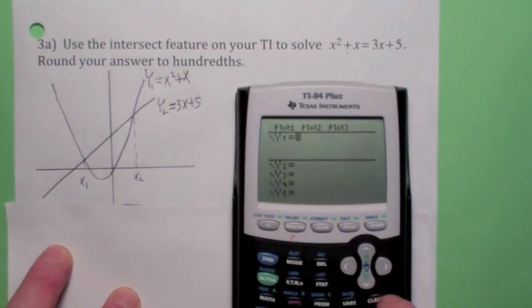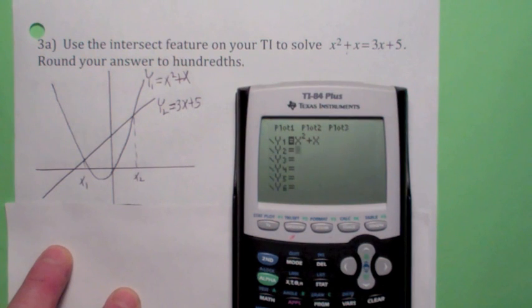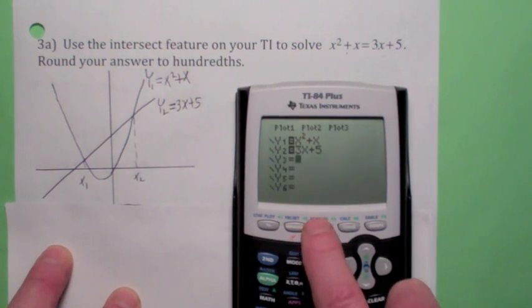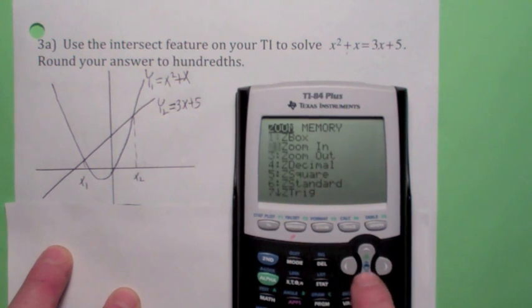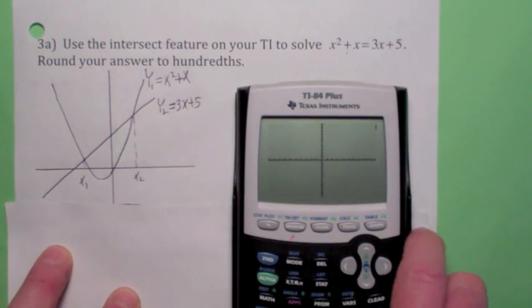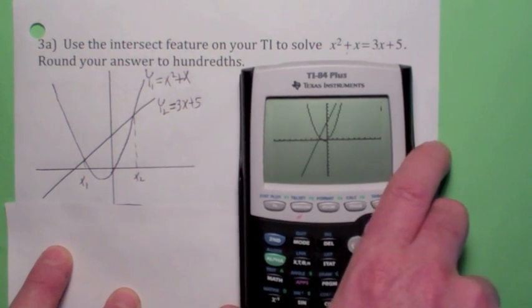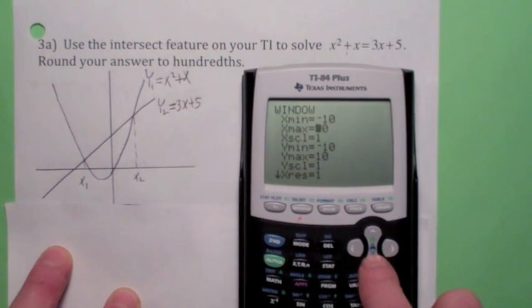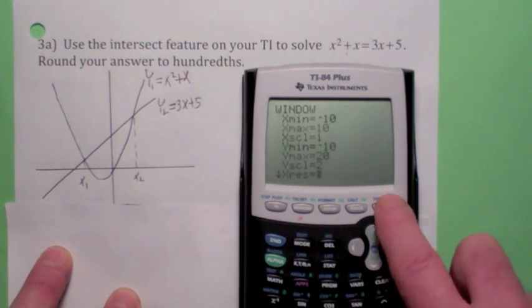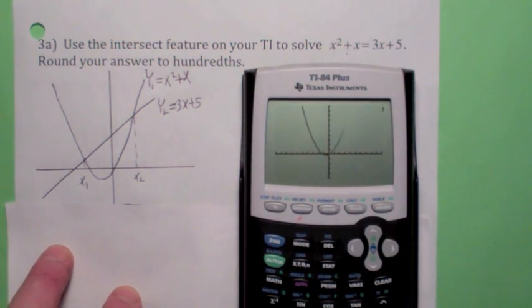So this is how we do it. Let's clear this. y1 is going to be x squared plus x. y2 is going to be 3x plus 5. And we've got to get a good window. Let's see about zoom standard. Is that a good window? Uh, not exactly. Let's make WiMAX bigger. Let's make it 20. Change this to 2. How about that? Does that look pretty good? That's good enough.